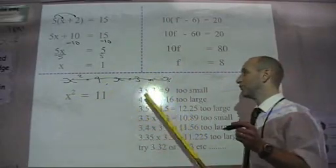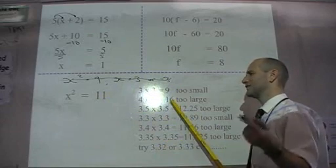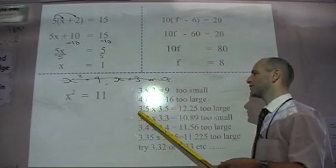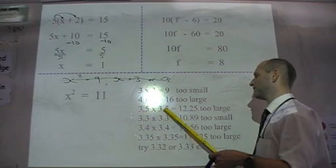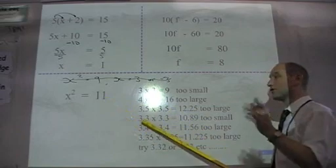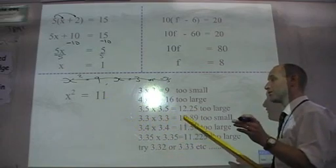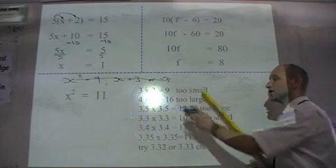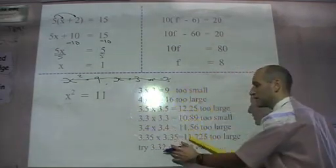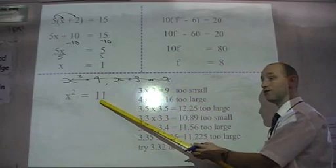4 times 4 is 16. That's far too large. Let's try somewhere in between, 3.5 times 3.5. 12.25, still too large. 3.3 times 3.3, that's too small. So each time I'm going higher, lower, higher, lower, I'm getting closer and closer to my magical answer of 11.